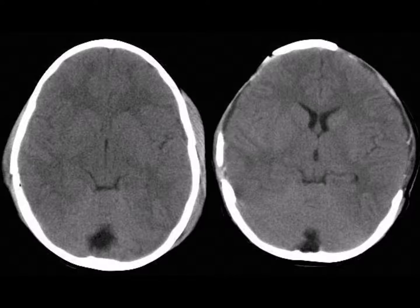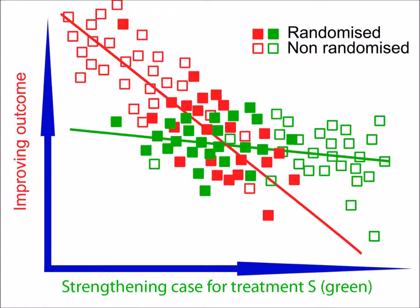A surgical operation called decompressive craniectomy is available for these patients. In this operation, a large piece of skull is removed to create space into which the brain can expand, relieving the pressure. This is thought to save lives, but many of the survivors have permanent and severe disability. A null-seeking trial of the treatment could be launched, in which the proportion of cases surviving was one outcome measure and the quality of life among the survivors was another. Both of these could be plotted against an index of indication, perhaps the rise in intracranial pressure. We could then make distinctions such as that between a low chance of survival but a high quality of life among survivors and a high chance of survival but a low quality of life among survivors.